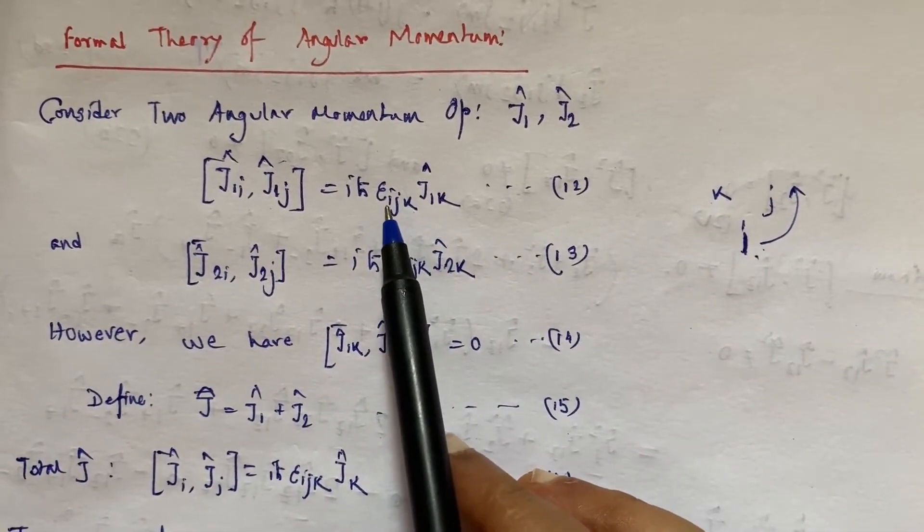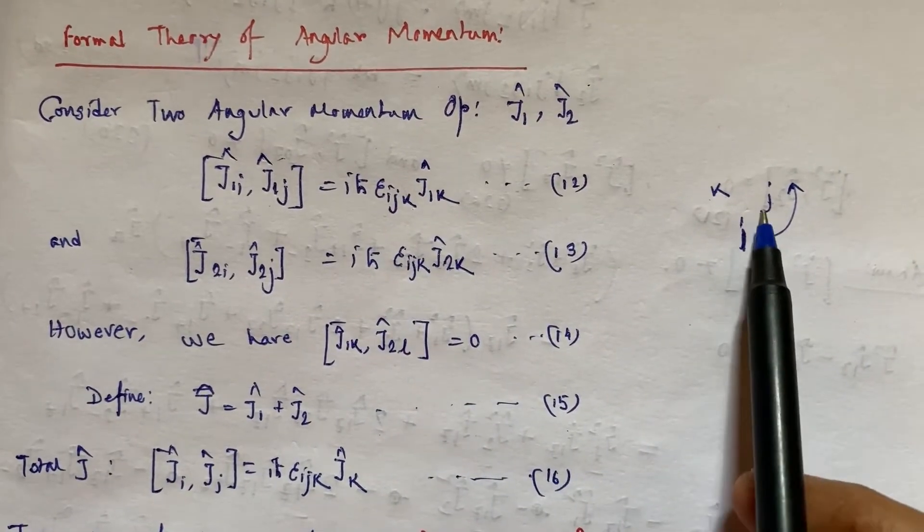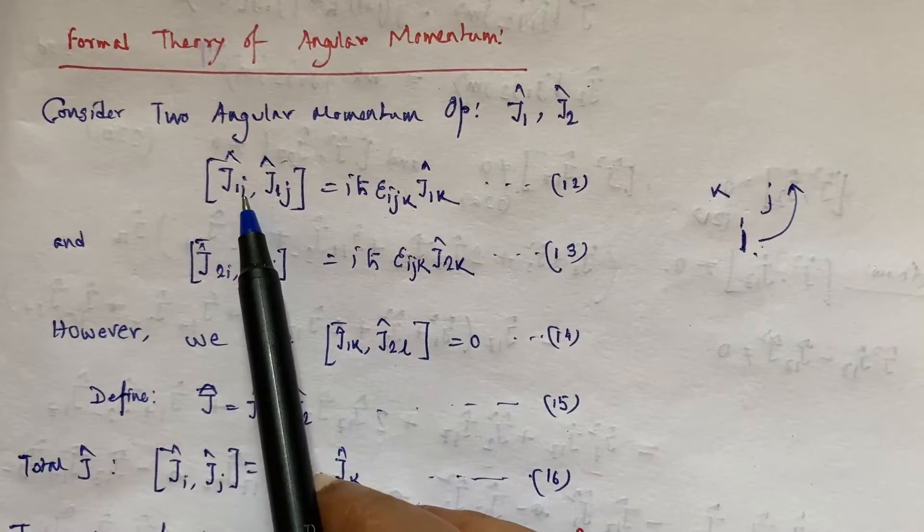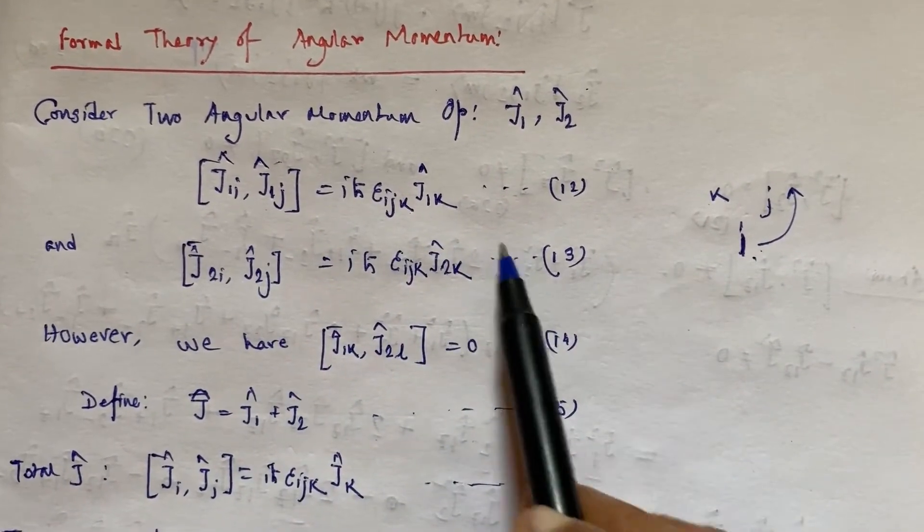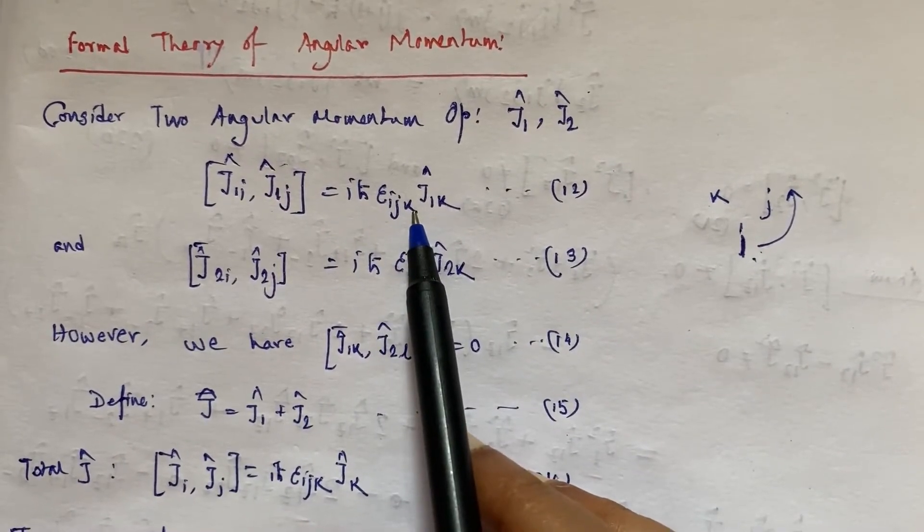If the sequence is maintained, that means if ijk comes here like if J₁i, J₁j, and J₁k is here, then this epsilon ijk will give us plus 1.